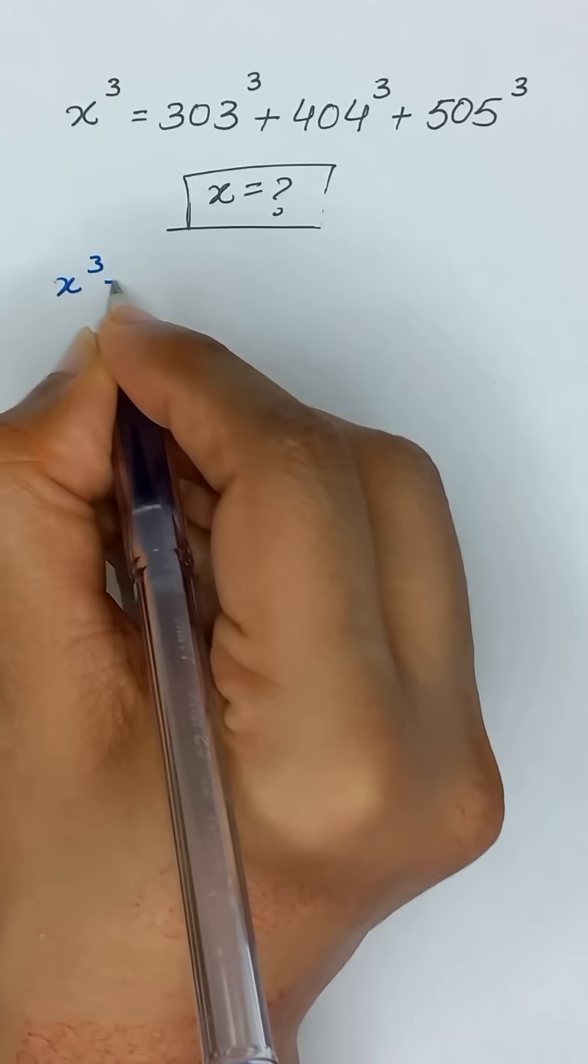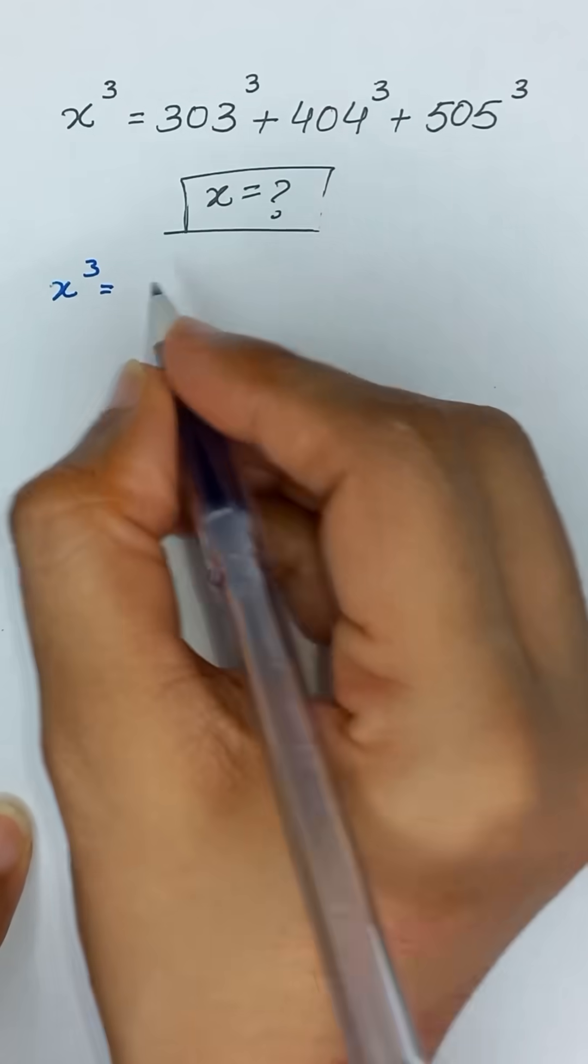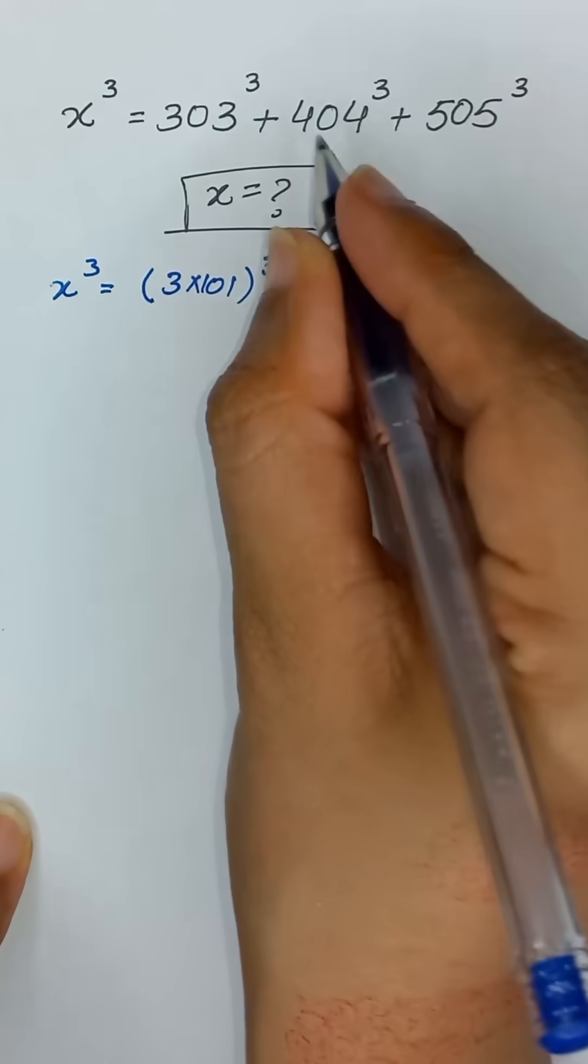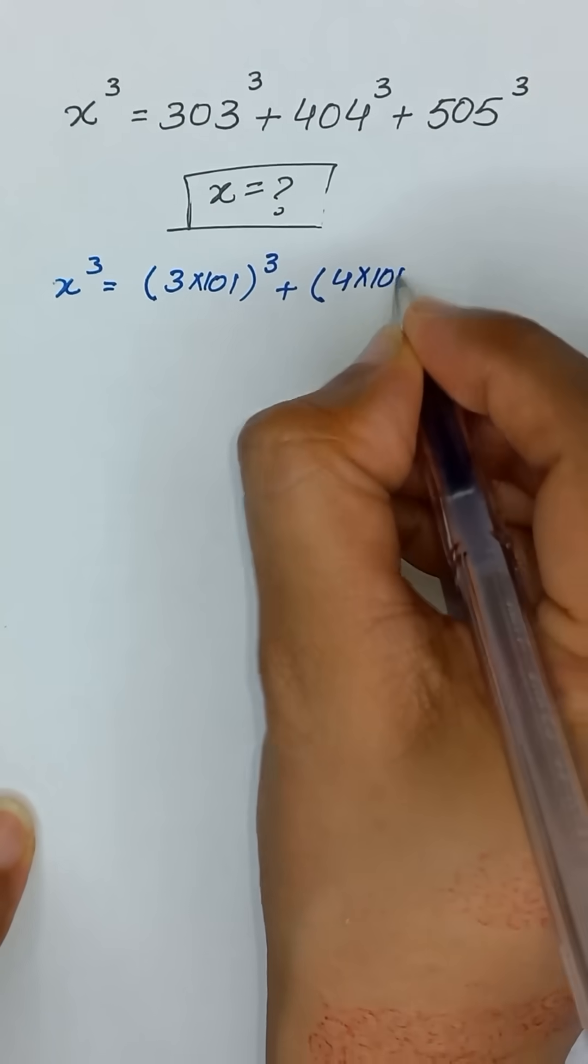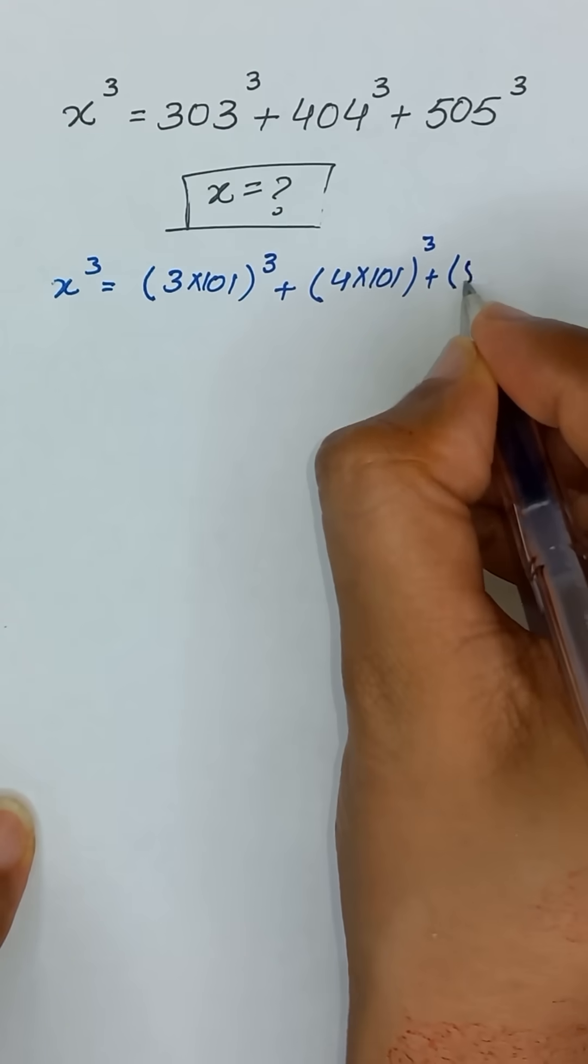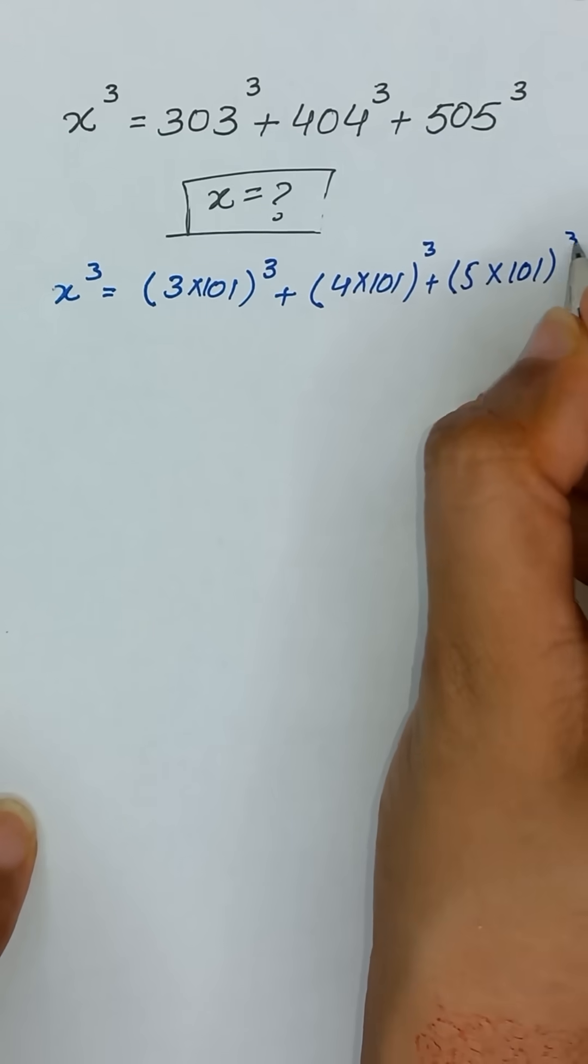So x cube is equal to 303 can be written as 3 times 101 and its cube, plus 404 can be written as 4 times 101 and its cube. Similarly 505 can be written as 5 times 101 and its cube.